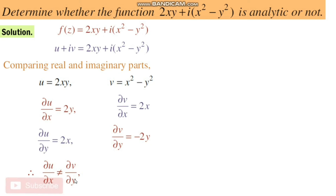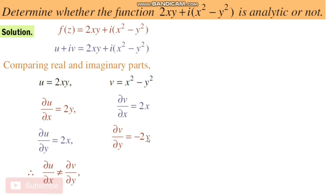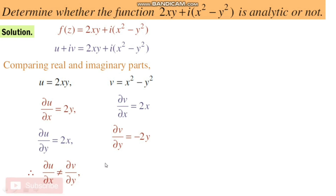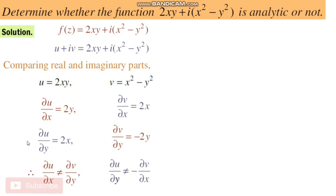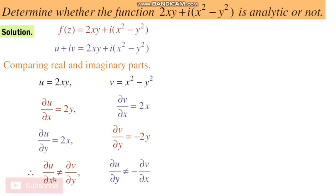We know that one of the Cauchy-Riemann conditions is ∂u/∂x = ∂v/∂y. But here, ∂u/∂x = 2y and ∂v/∂y = −2y; these two are not equal. Therefore ∂u/∂x ≠ ∂v/∂y. The second condition is ∂u/∂y = −∂v/∂x, but this condition is also not satisfied. So both conditions of the Cauchy-Riemann equations are not satisfied.